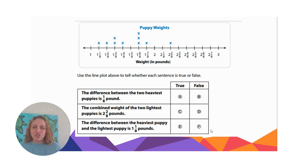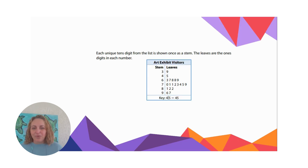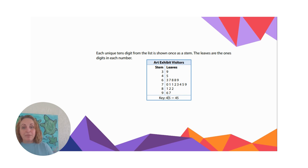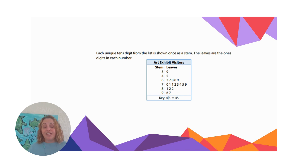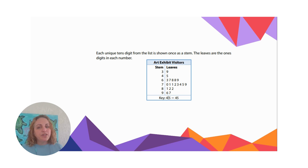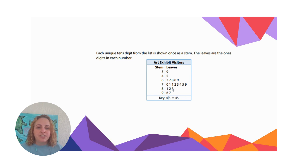That's answering some questions with line plots. Now let's look at a stem and leaf plot. As you probably remember from the earlier video, stem and leaf plots are a little weird. But it is a way to represent data and we need to understand how to read them. It says each unique tens digit is listed as a stem — each of these is tens.